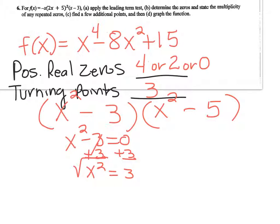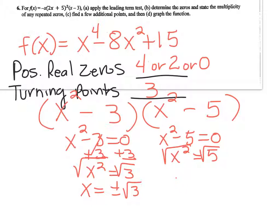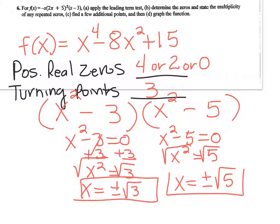But when you get the square root of that, you have to keep in mind that x is plus or minus the square root of 3. Then we do the same thing with the other factor. x² - 5 = 0, x² = 5, we get the square root of both sides, so x equals plus or minus square root of 5.